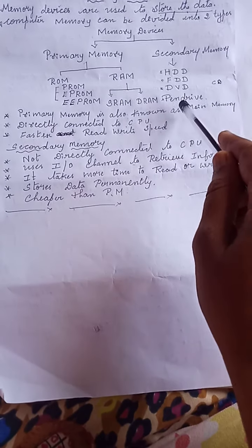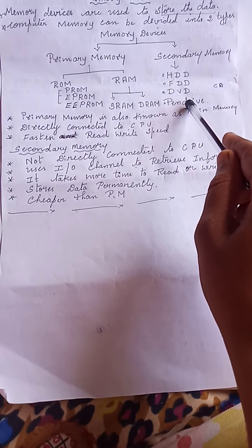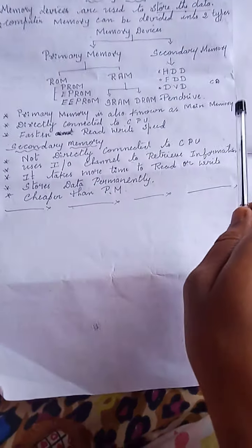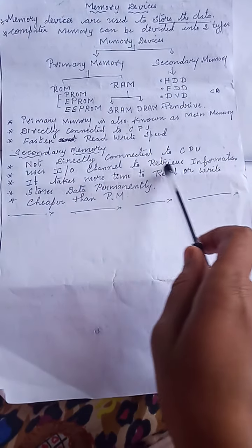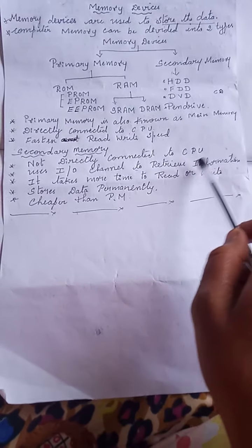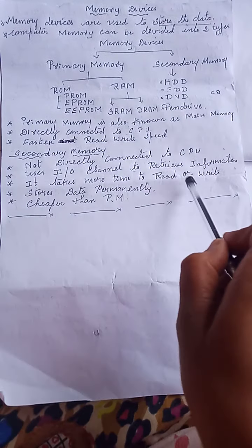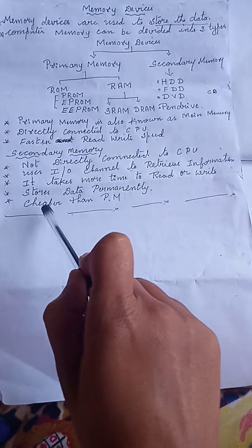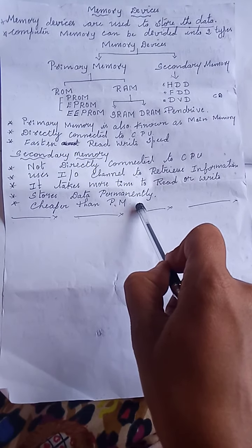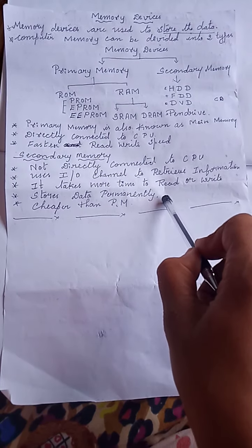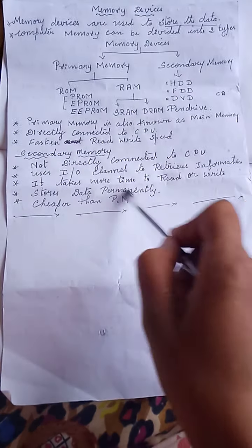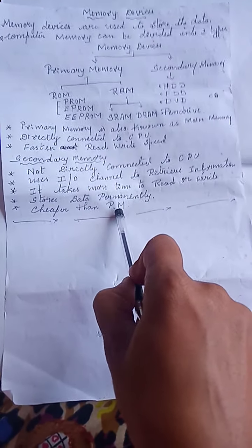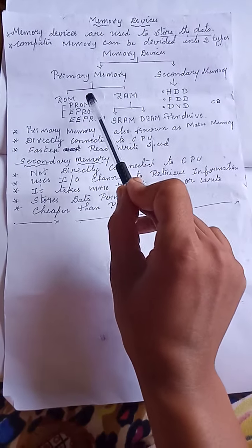Secondary memory is not directly connected to the CPU. Good examples are pen drives and CDs — you connect them externally. Secondary memory uses input and output channels to retrieve information, and it takes more time to read and write compared to primary memory. It stores data permanently — for example, songs or videos saved on a pen drive or CD. It is also cheaper than primary memory.